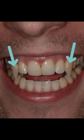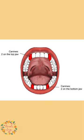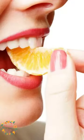Because of its sharp cusp, it is also called the vampire tooth. There are four canines in our oral cavity — two in the upper jaw and two in the lower jaw, one on either side. The purpose of the canine is for tearing the food and helping in the chewing process.